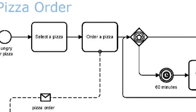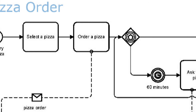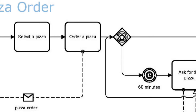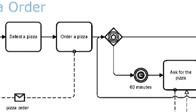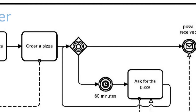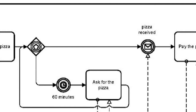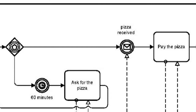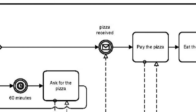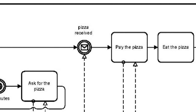After ordering, the customer waits for the pizza to be delivered. The event-based gateway after the task 'order a pizza' indicates that the customer waits for two different events that could happen next: either the pizza is delivered, as indicated with a message event, or there is no delivery after 60 minutes. After one hour, the customer stops waiting and calls the vendor asking for the pizza. We assume the clerk promises the pizza will be delivered soon, and the customer waits again, asking again after the next 60 minutes, and so on.